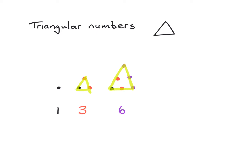Now I have three, four, five, six dots, and as you can see I have a triangle. The second triangle is still there, and the first triangle is here. The fourth triangle sequence adds another three dots to the previous six, giving us ten dots total.